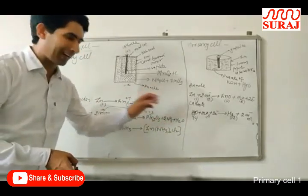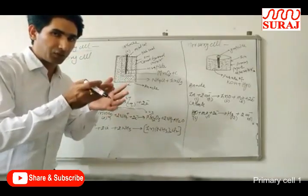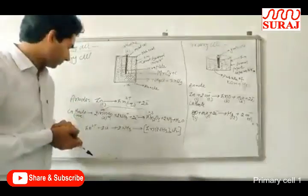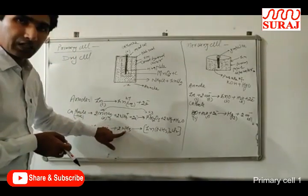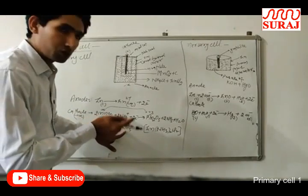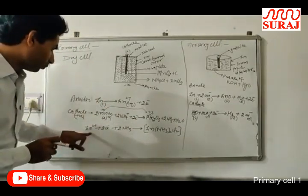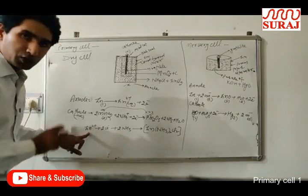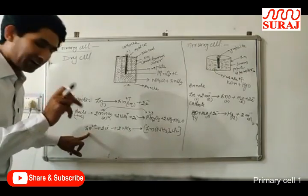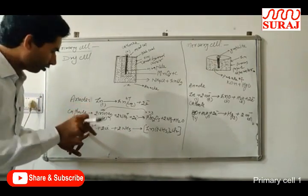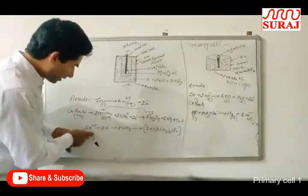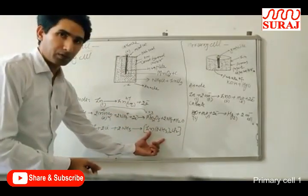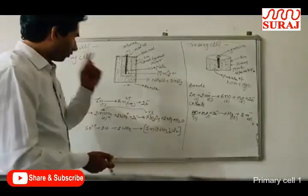Ammonia changes into gaseous form and can build up pressure inside the cell, causing it to burst. So the ammonia must be converted to another form. Zn²⁺ ions plus chloride ions plus ammonia — Zn²⁺ is a transition metal ion with tendency to form complex compounds. So the NH₃ combines with Zn²⁺ ions and forms a complex compound, keeping the cell safe.